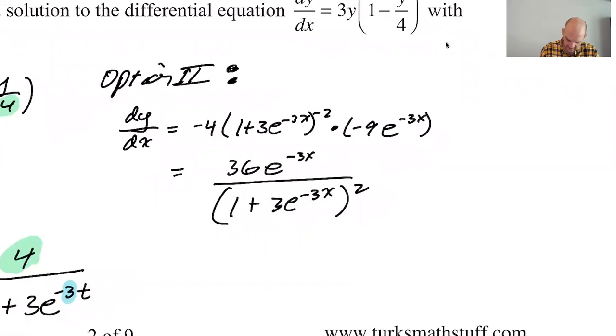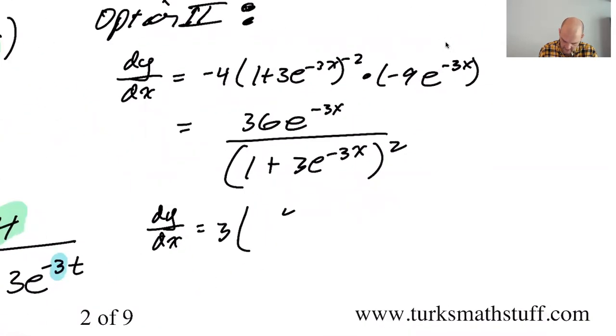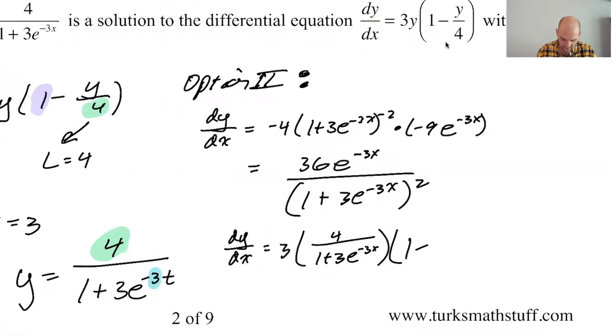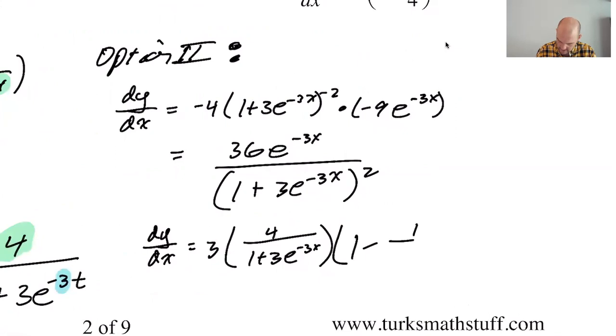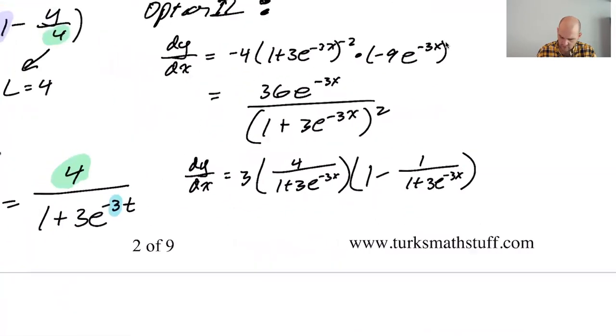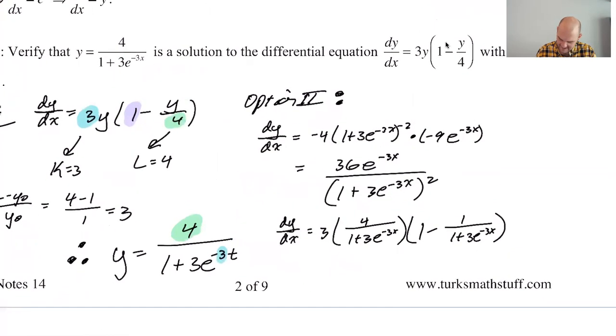And then the other version, by substitution, should be 3 times whatever y is, which is 4 over 1 plus. I'm just subbing into the differential equation. And then 1 minus 1 minus y over 4. So 1 minus y over 4. The 4s cancel, and you just get 1 plus 3e to the negative 3x. And then if I simplify this, it probably works out to being the same thing. It doesn't really look like it's going to to me.